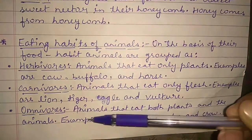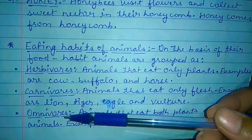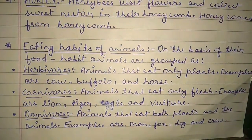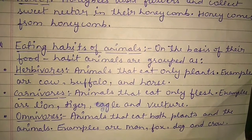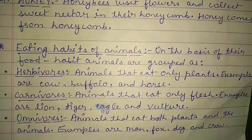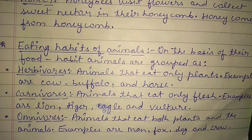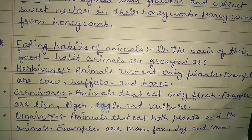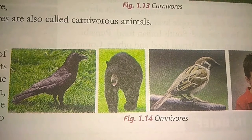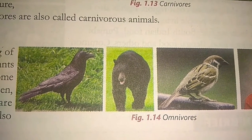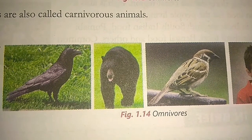Now let us understand the term omnivores. 'Omni' means all kind and 'vores' means eat. So omnivores are the animals that eat both plants and animals — they eat plant products as well as animal products. Examples are man, fox, dog, and crow. Omnivorous animals are also called omnivores.